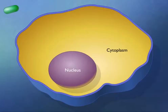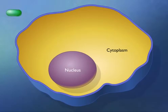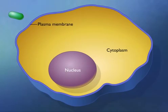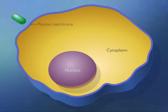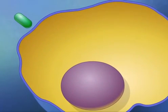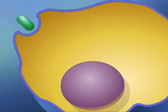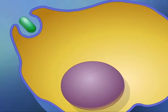The substances taken in by single-celled organisms are often particles or large polar molecules that cannot cross the hydrophobic plasma membrane. Many single-celled eukaryotes employ endocytosis to ingest such food particles. In this process, the plasma membrane extends outward and surrounds the food particle.